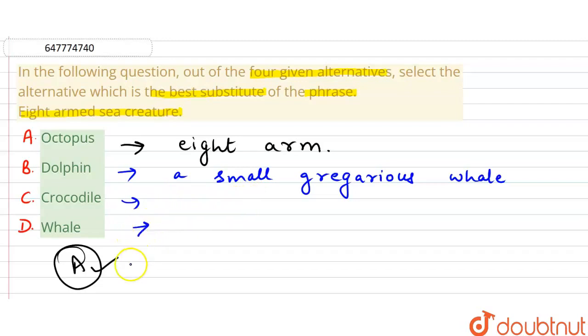The last one, or the D part, is Whale. We can note that Crocodile comes in the reptiles category. Whale is a very large marine mammal with a streamlined hairless body. As we have already discussed, our correct answer is option A. Thank you.